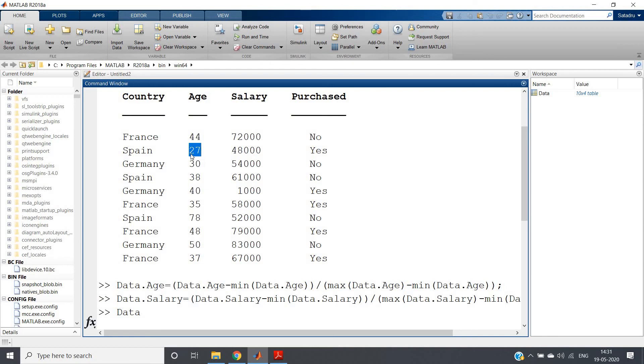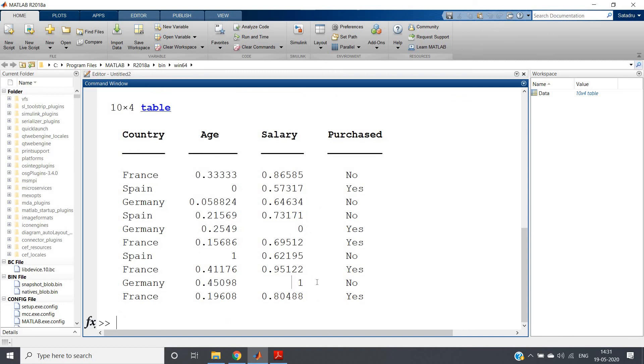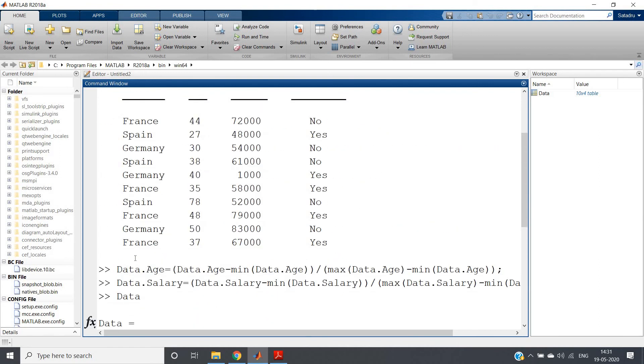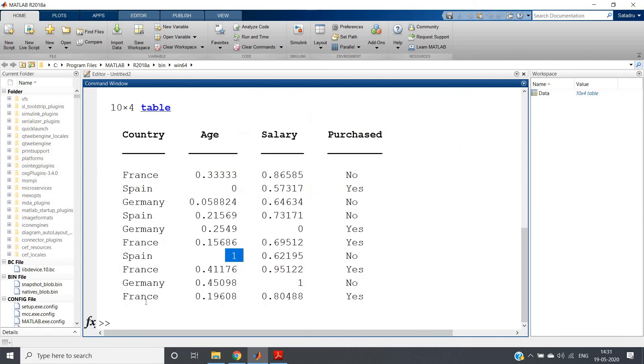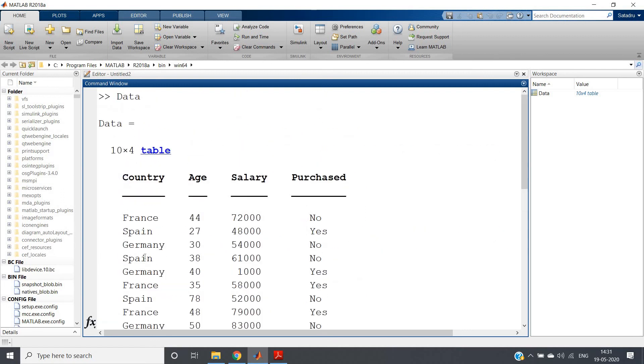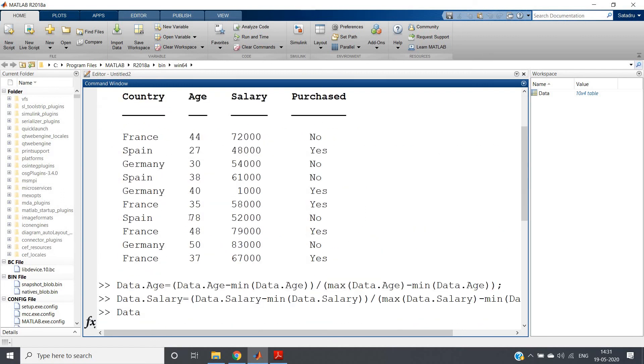For Spain, see here, because in the age this is the minimum one. So for minimum obviously we will be getting zero because in the formula, min minus min will become zero. Where we are getting one value? Like here we are getting one in the age column.